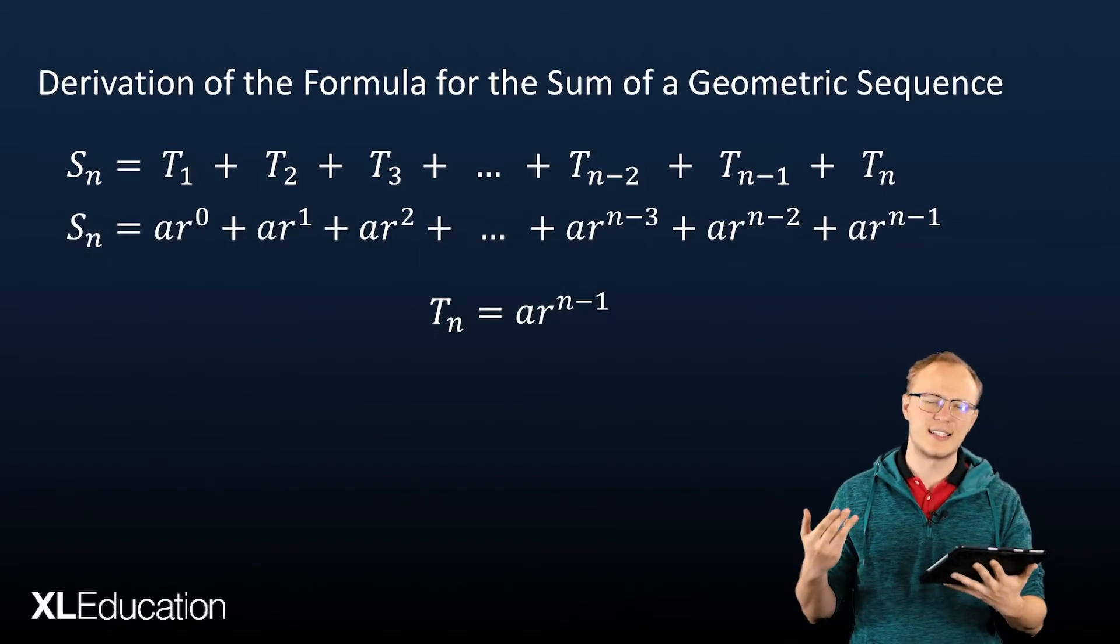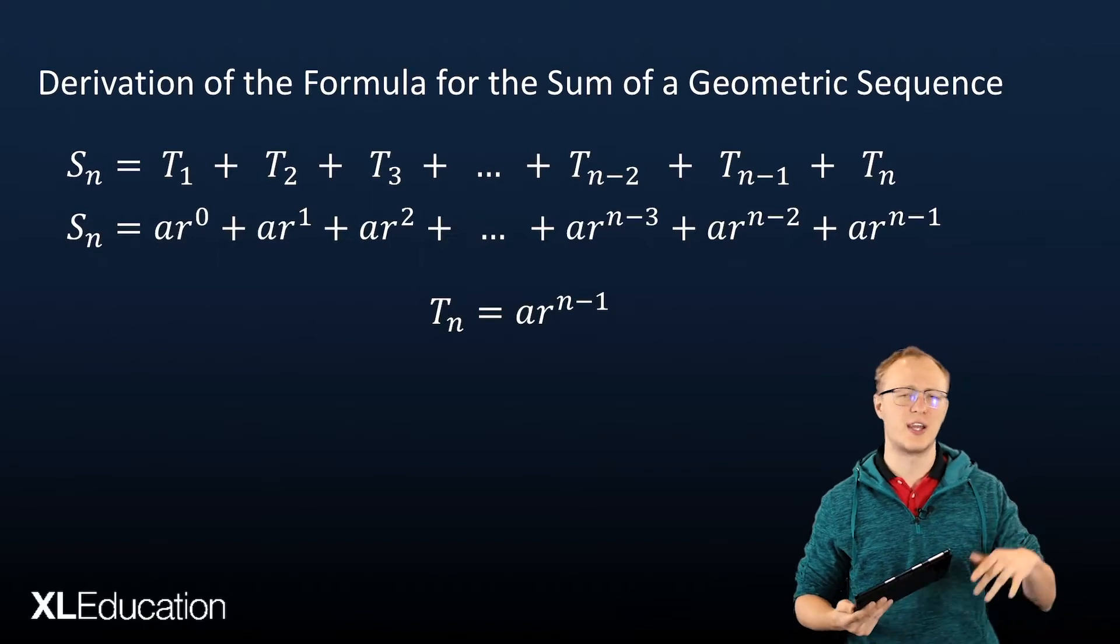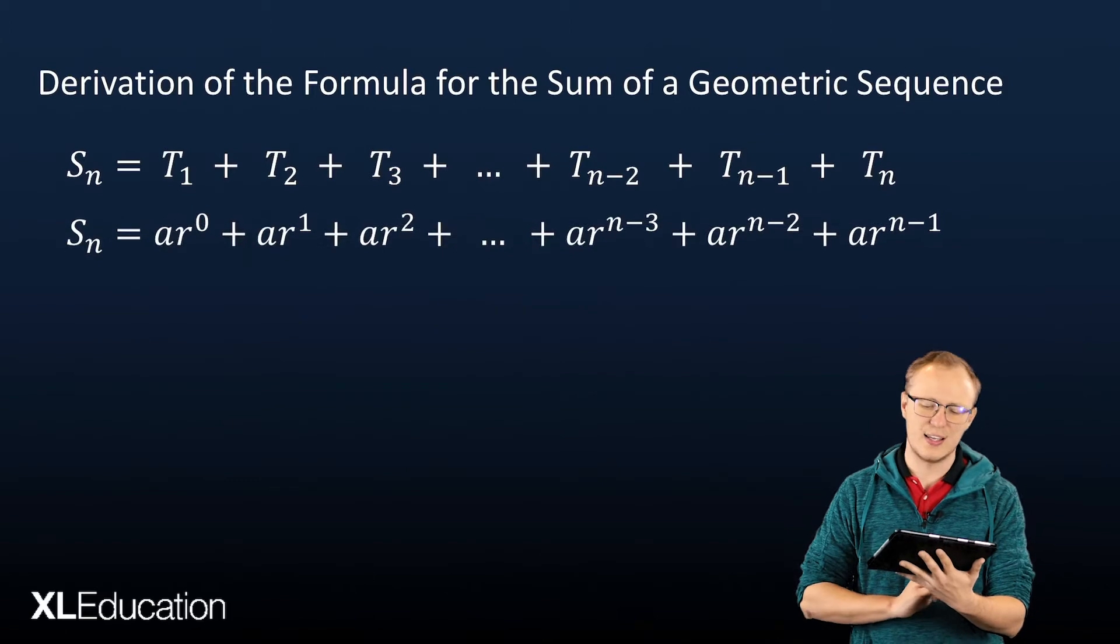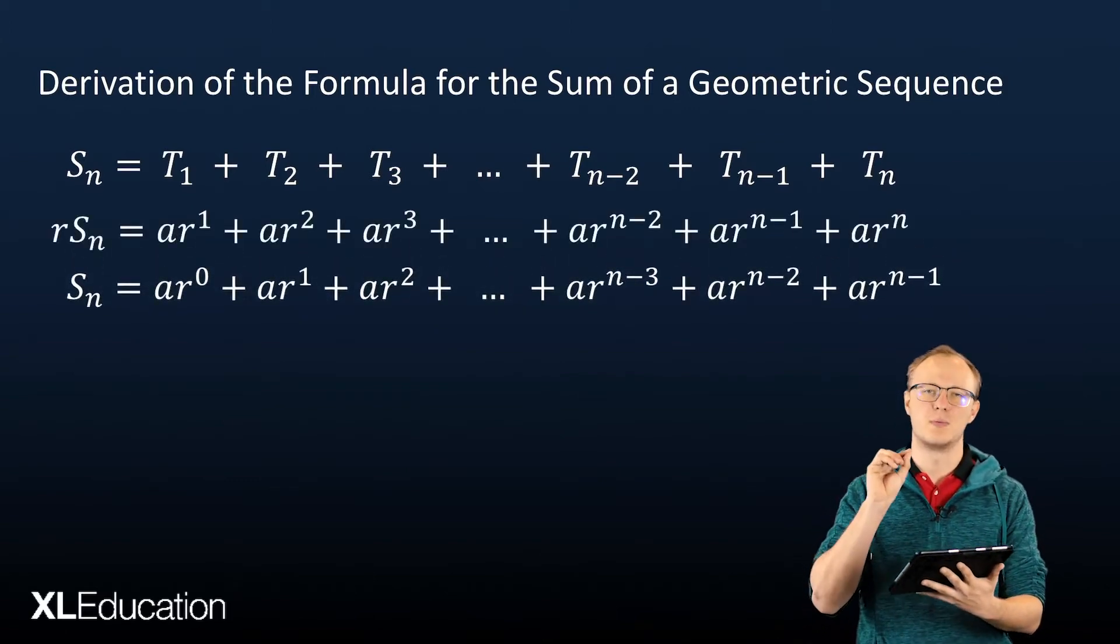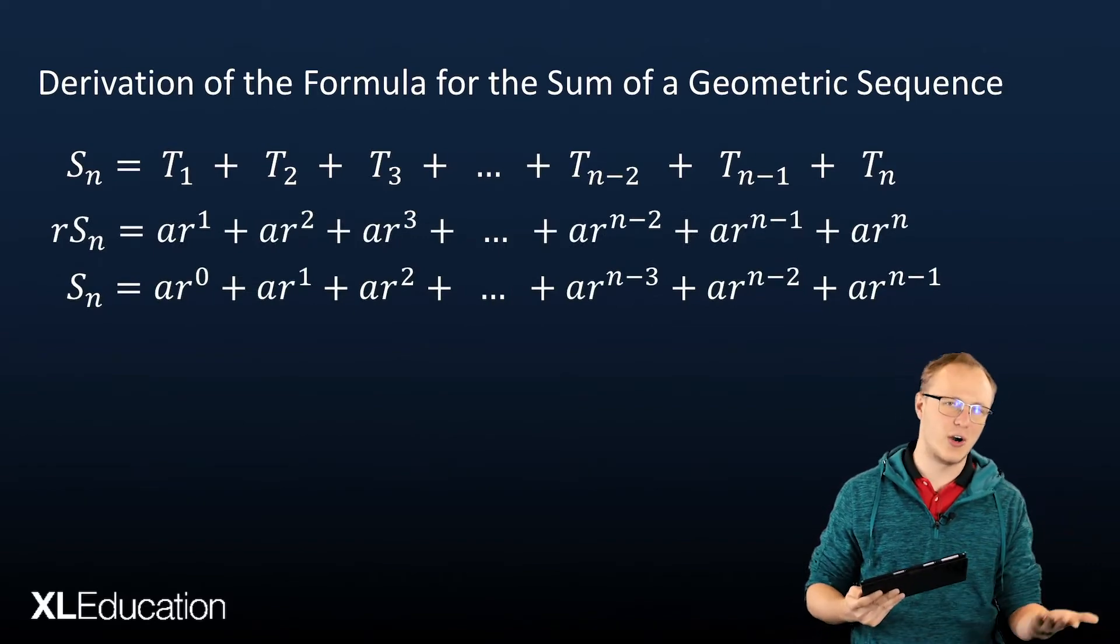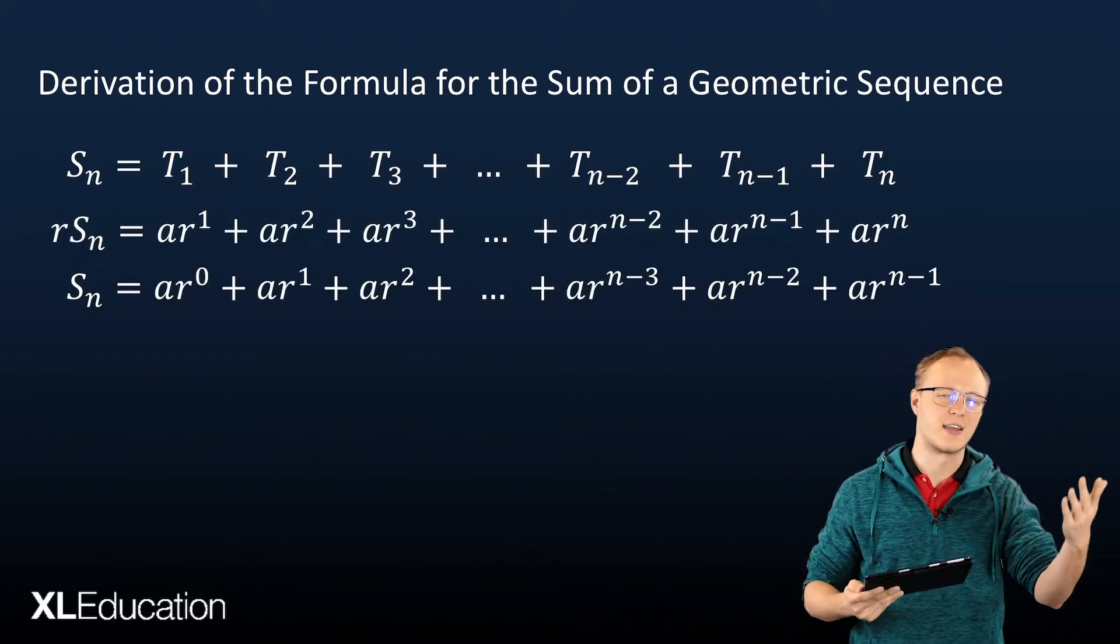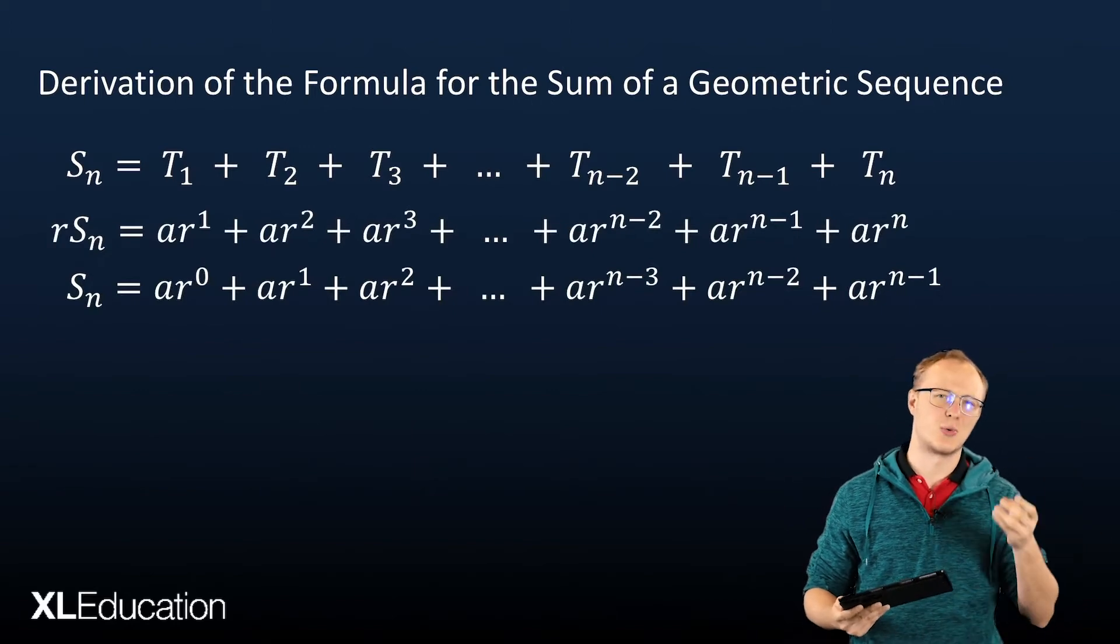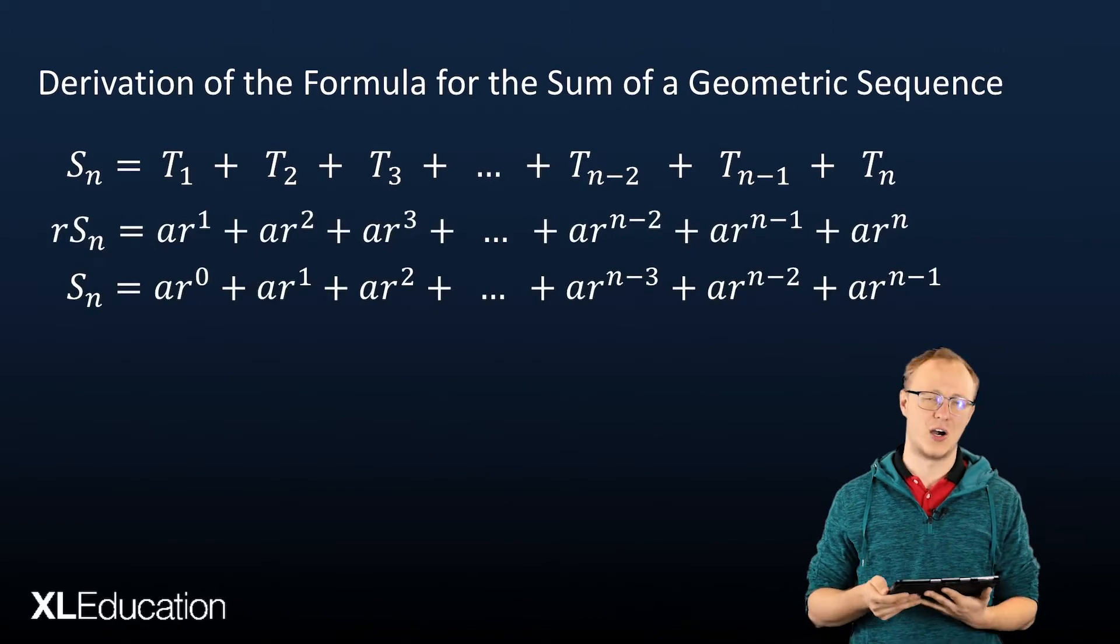And it becomes Sn equals ar to the 0 plus ar to the 1 plus ar squared, etc. So then what we're going to do is take that very same thing, rewrite it, but multiply it by r. And when we do that, we get rSn. And ar to the 0 becomes ar to the 1, ar squared becomes ar cubed, etc. So we just add 1 to the exponent of r when we multiply it by r.